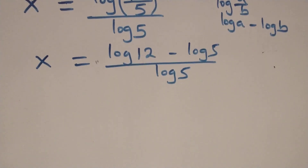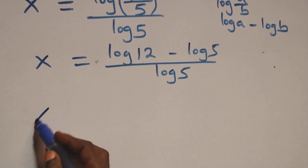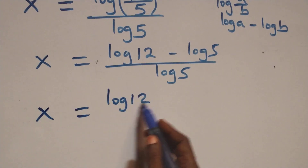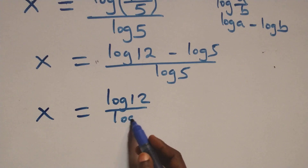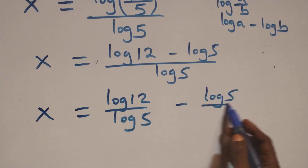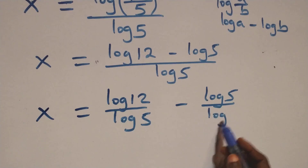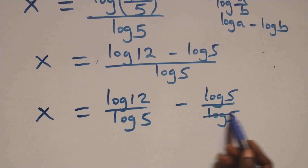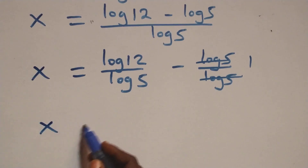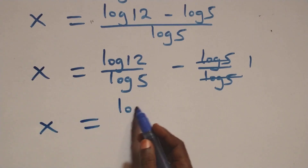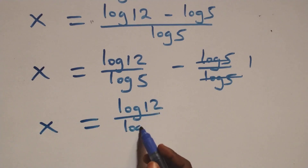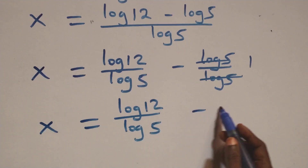In the next step, we separate this into two fractions: x equals log 12 over log 5 minus log 5 over log 5. Since log 5 over log 5 equals 1, this gives x equals log 12 over log 5 minus 1.